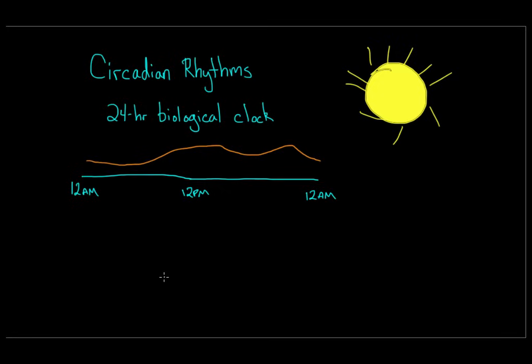Circadian rhythms also change as you age, which is why younger people tend to be night owls while older people tend to wake up and go to bed earlier. Your circadian rhythms can also prevent you from sleeping in — if you get up every day at 6 a.m. on weekdays, you'll likely still wake up around 6 a.m. on Saturday because your internal biological clock has adjusted and regulates your metabolism, body temperature, and sleep cycles accordingly.